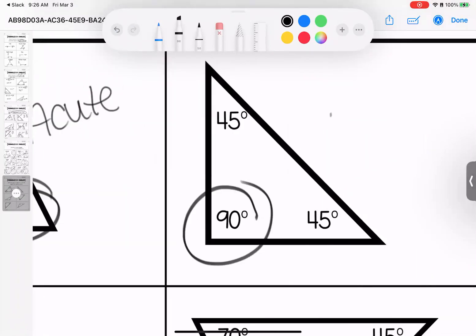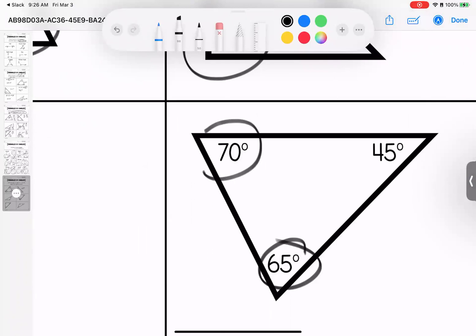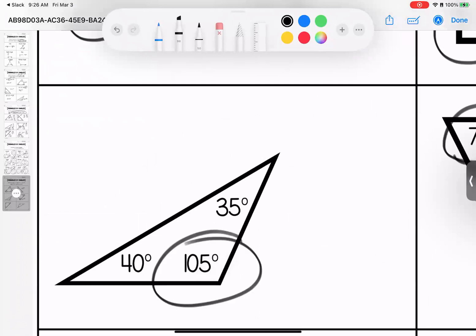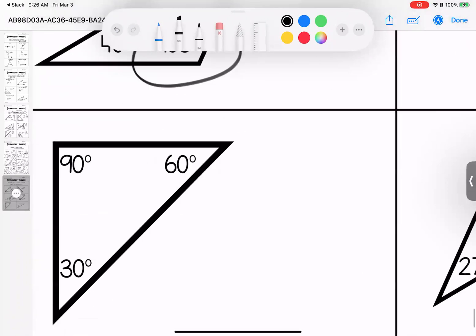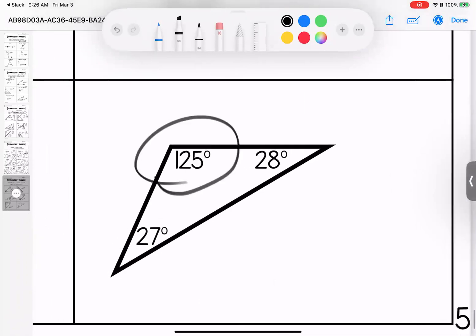For this one, this angle helps me decide that this is a right triangle. For this one, all three helped me decide that this is acute. This one helps me decide that this is obtuse. This guy helps me decide that this is right, and this one helps me decide that these are obtuse. Any questions, bring them with you to class.